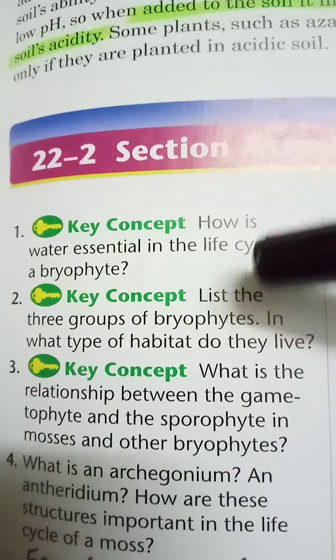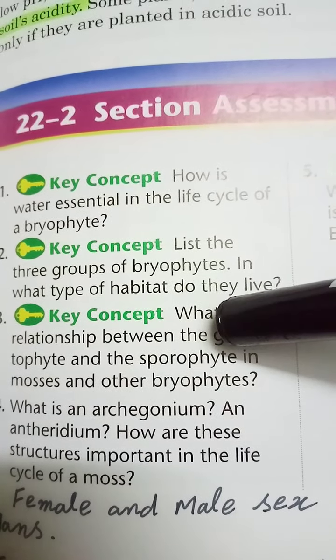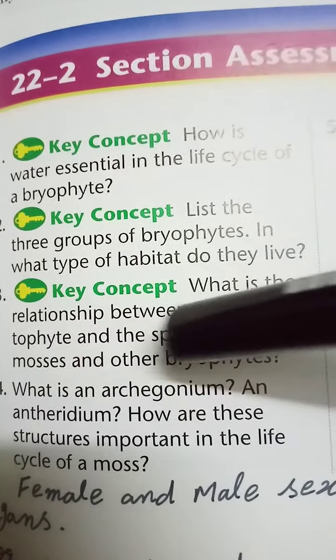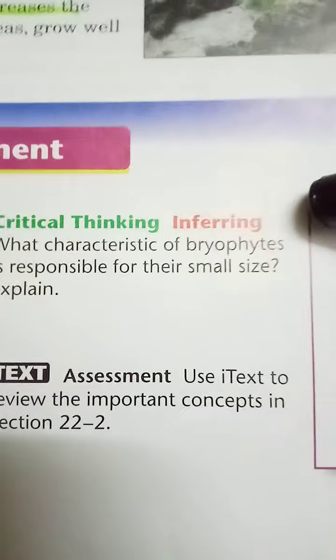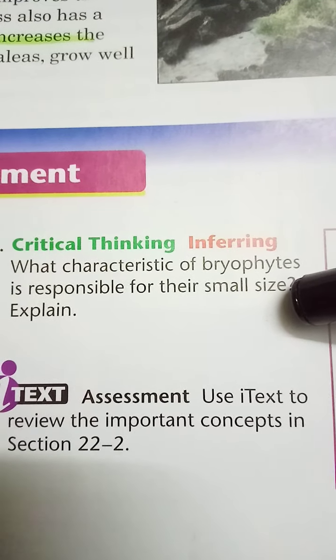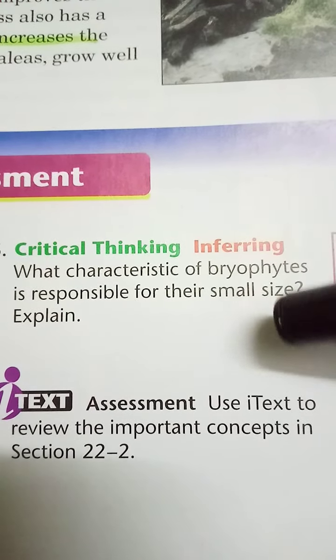The sporophyte develops into the gametophyte and the gametophyte develops into the sporophyte — this is alternation of generation. Fourth: what is an archegonium and an antheridium? Archegonium is the female sex organ and antheridium is the male sex organ; these are very important structures for the survival and spread of bryophytes. Fifth: which characteristic of bryophytes is responsible for their small size? The lack of vascular bundles — xylem and phloem — is responsible, as they absorb water only by osmosis. Hope you understand bryophytes through this lecture.